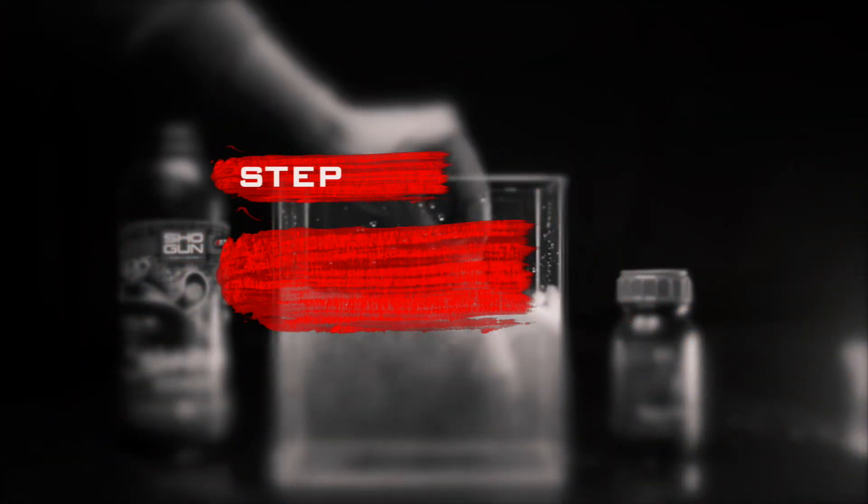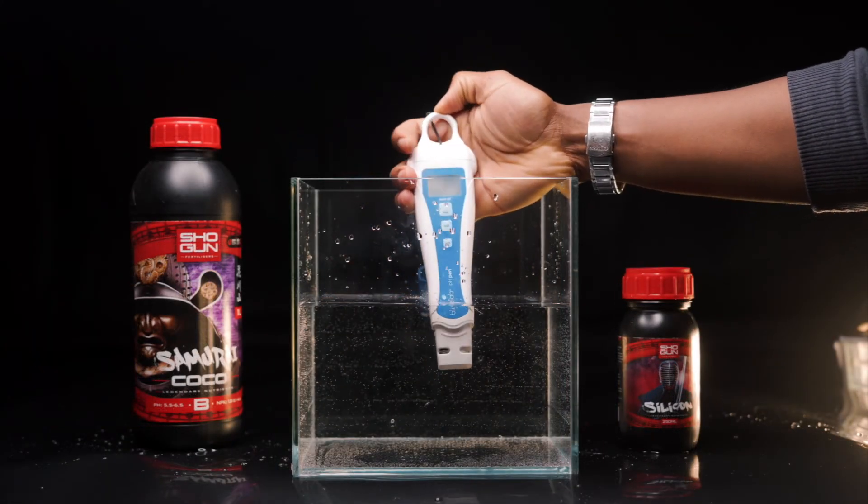Step 6: Your mix is almost done. Now you're just checking the pH and it should be ready to feed your plants.